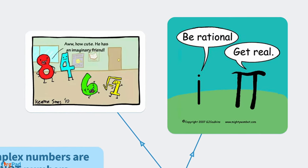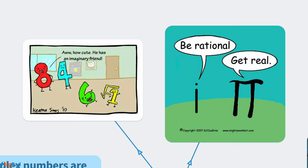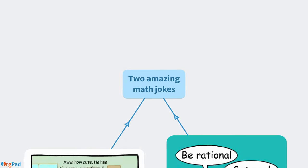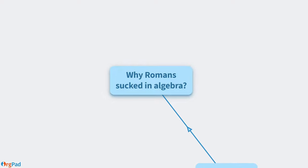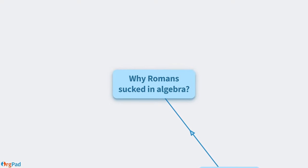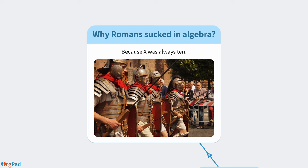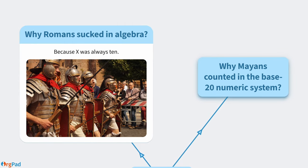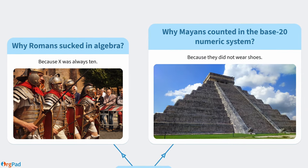One more thing, I have mentioned in the beginning that I consider these mathematical jokes rather silly. As a bonus for watching this video till the end, let me show you two math jokes I find absolutely amazing. Do you know why Romans sucked in algebra? Because X was always 10. We are counting in the base 10 numbers, Mayans used the base 20 numeric system. Do you know why? Because they did not wear shoes.